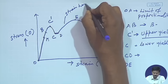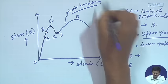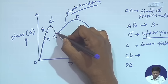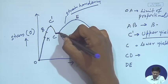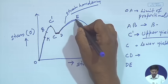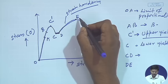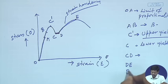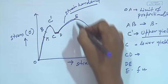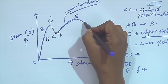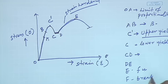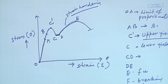After point D, from D to E, strain hardening occurs. The material resists deformation and needs more load to continue deforming. With increase of stress, strain also increases up to point E, which represents the ultimate stress f_u — the highest point. After that, the stress is reduced and at a certain point the material breaks.